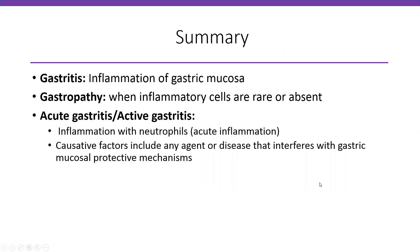In summary: gastritis is inflammation of gastric mucosa; gastropathy is when inflammatory cells are rare or absent. Acute or active gastritis is inflammation with neutrophils. Many factors can cause this — any agent or disease that interferes with the gastric mucosal protective mechanism. It is very non-specific; you must look at the clinical scenario to determine what is causing active gastritis in your patient.